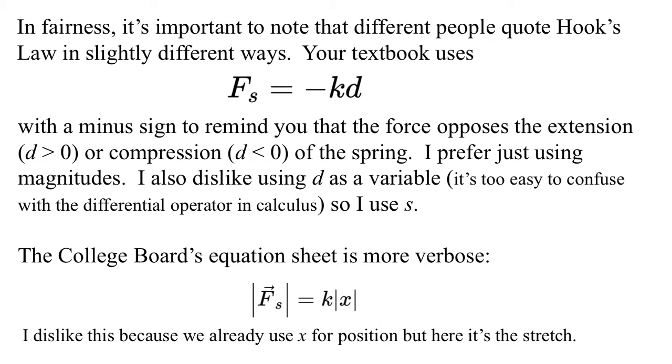In fairness, it's important to note that different people quote Hooke's Law in slightly different ways. For instance, your textbook likes to say F sub S is minus KD, where here they're putting a direction on F sub S, and they're saying it's always opposite to the stretch. So if the thing is positively stretched, the force points negatively, and if the thing is negatively stretched, i.e. compressed, the force points positively. It's always opposed to what you're doing to the spring.